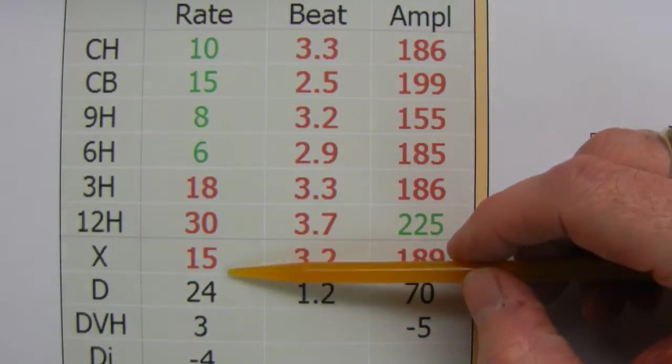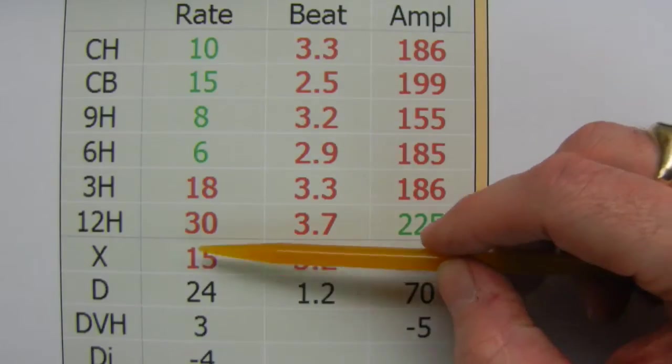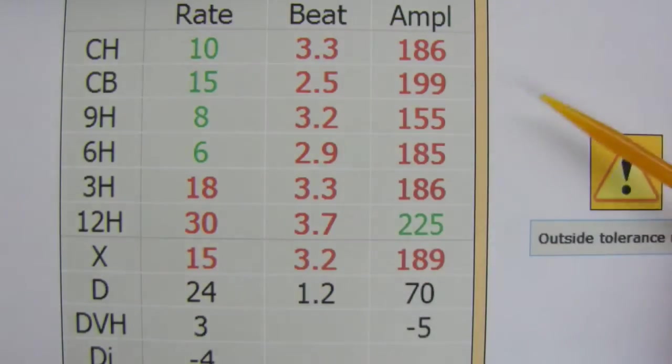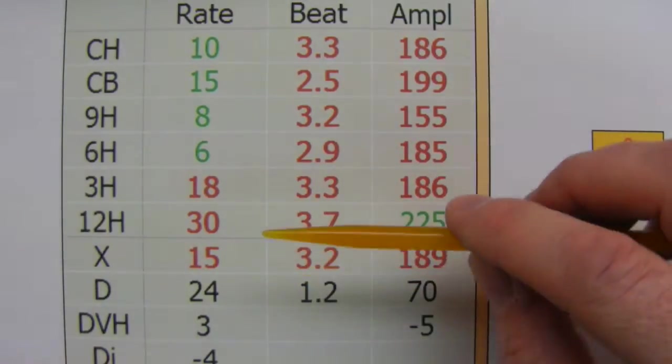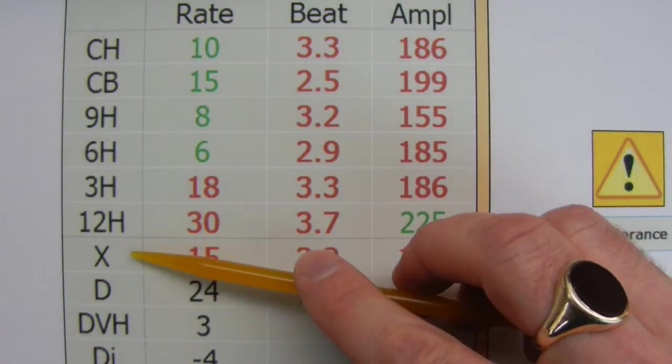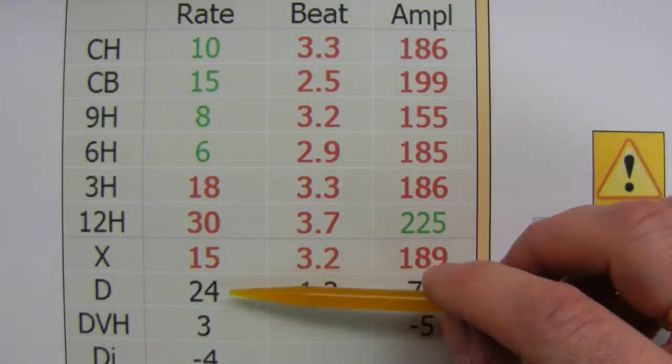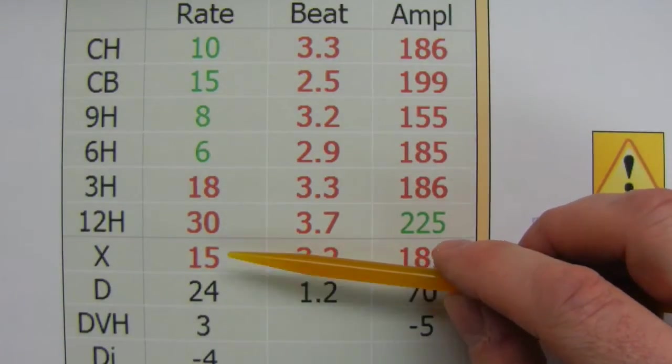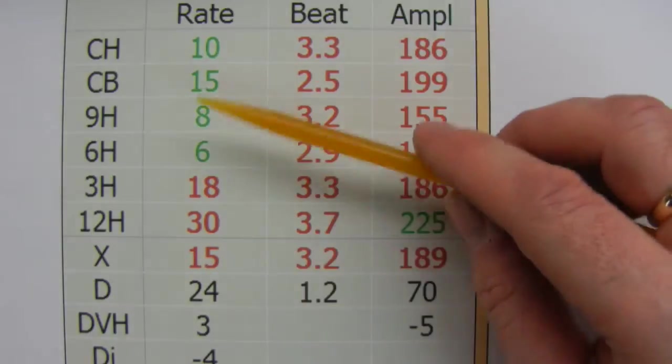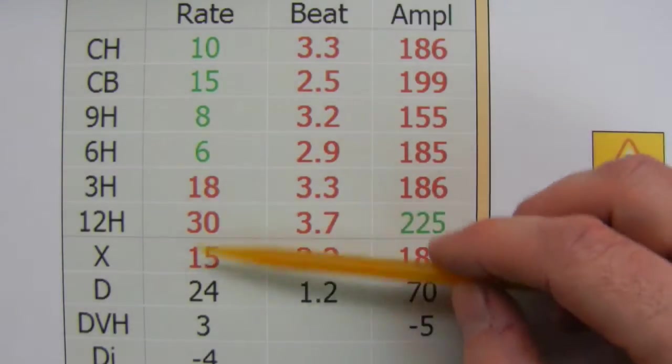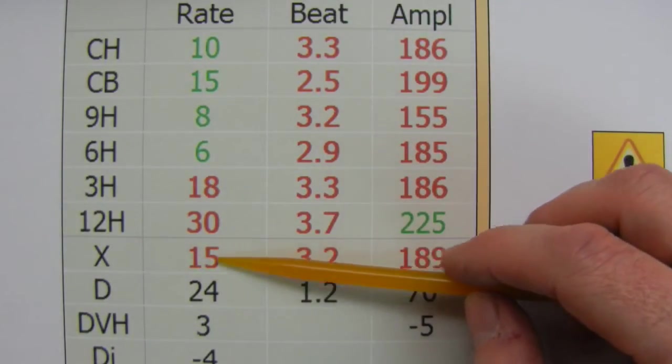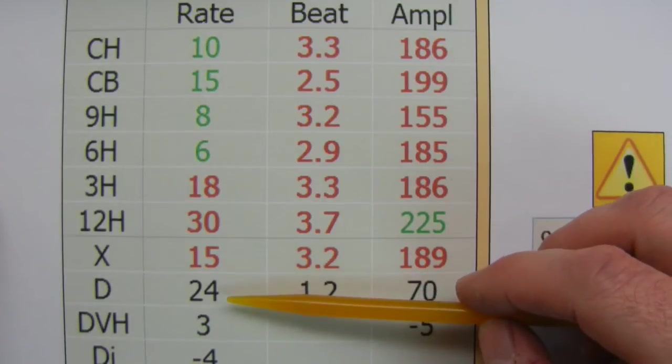Again, sticking with the rate, this value here, the X value, this is the line that the customer is most interested in. Because this is the line that says what the machine thinks the watch will do overall. It's not exactly an average. The machine takes into account the amount of time spent in each position on average. And it comes up with a figure for what it thinks the watch will do.